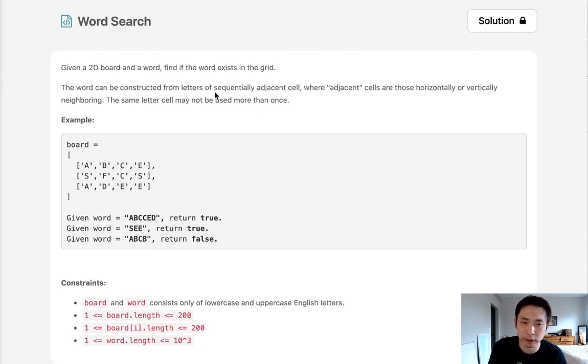The word can be constructed from letters of sequentially adjacent cells, where adjacent cells are those horizontally or vertically neighboring. Say we're given this board with the word ABCCED, we can see that it exists through this path ABCCED so we return true.